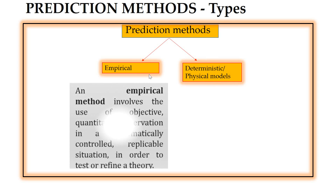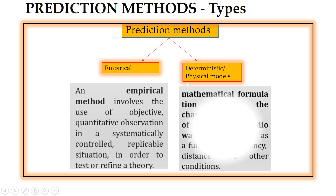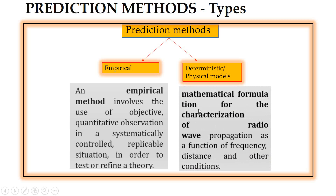What is the empirical model? It involves the use of objective quantitative observation in a systematically controlled, replicable situation in order to test or refine the theory — you are essentially observing all the things. Coming to the deterministic model, it deals with mathematical formulas for characterizing radio wave propagation as a function of frequency, distance, and other conditions — you put a formula for all the waves.